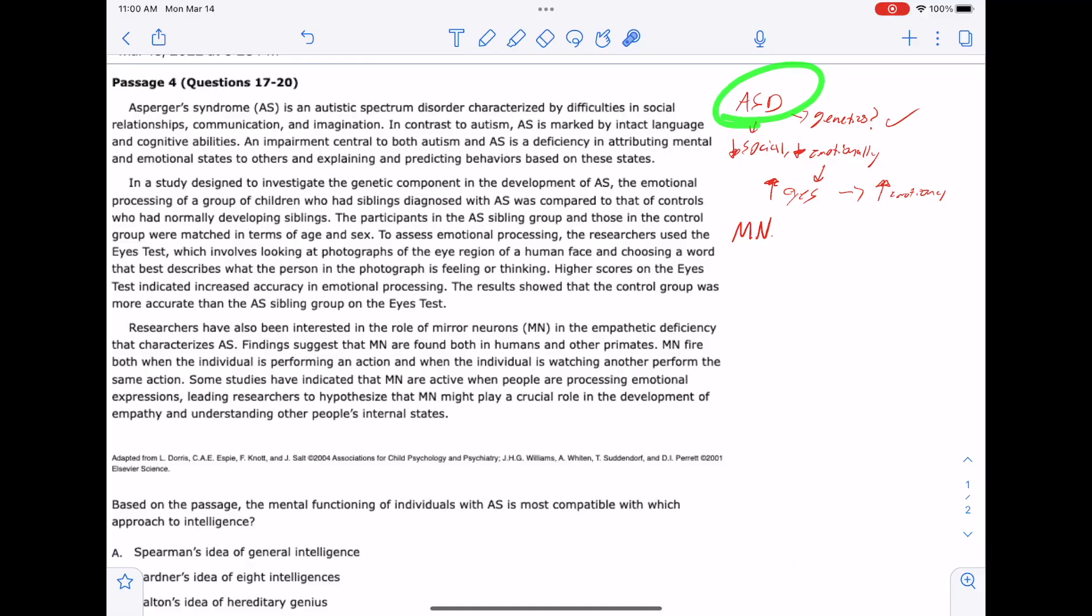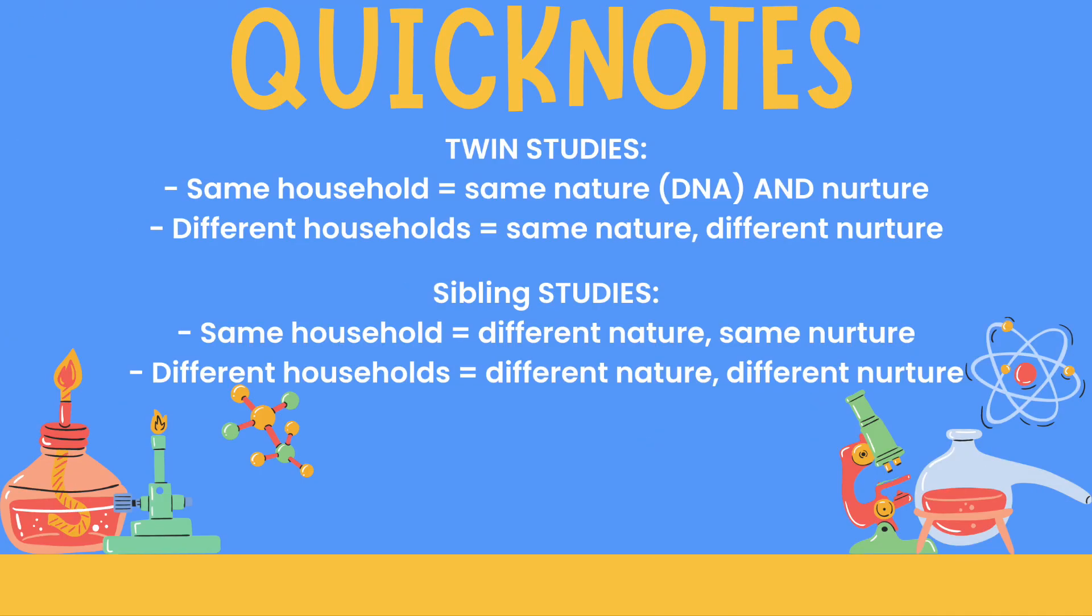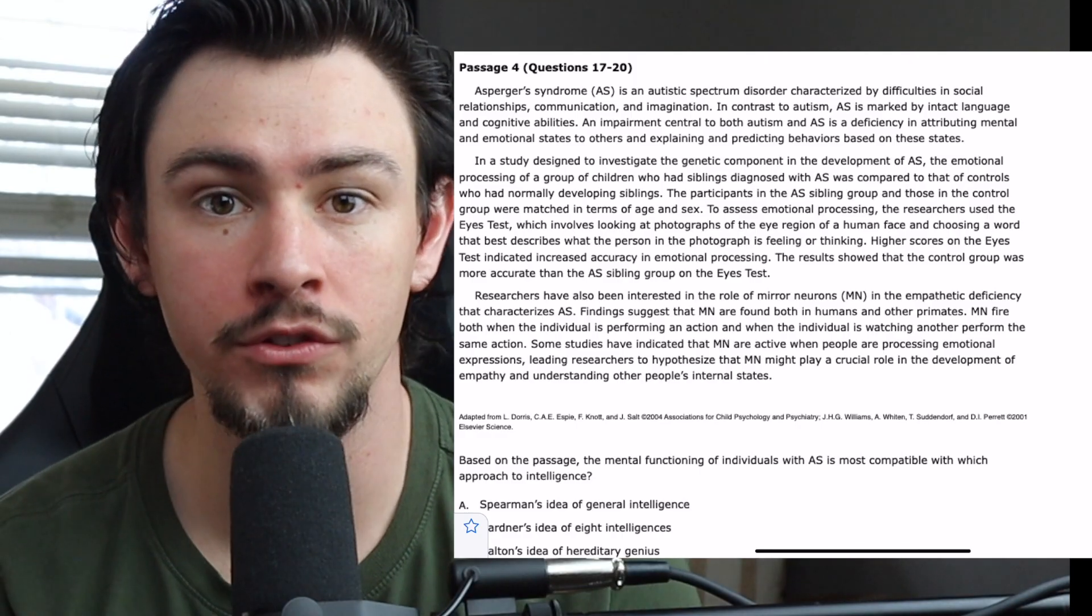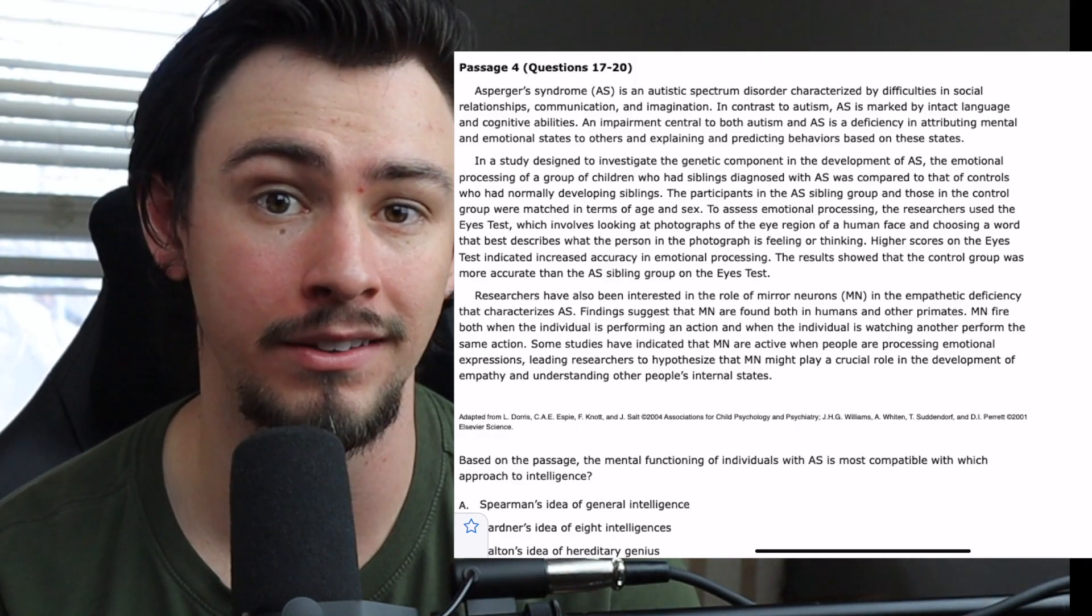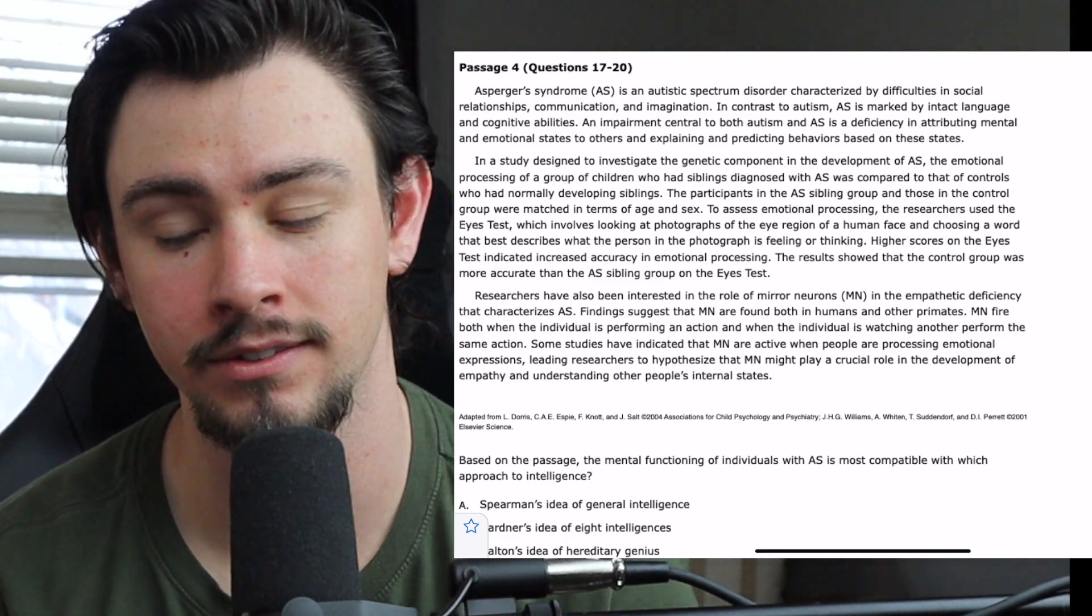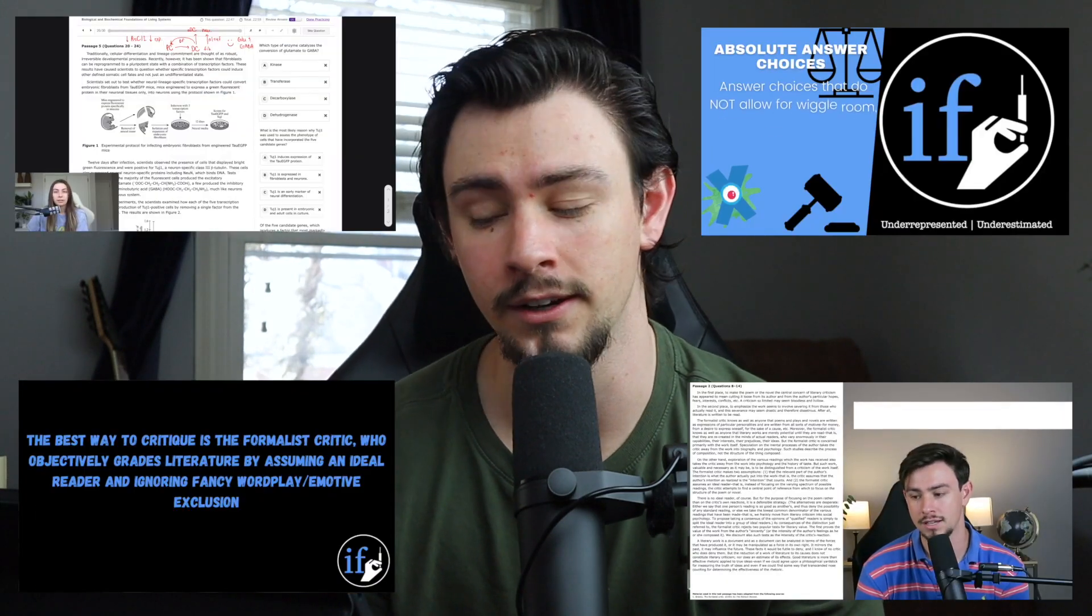Today I'm going to demonstrate proper MCAT strategies to help make the passage and questions a bit easier and teach you some pretty cool sciences along the way. We're going to be using the double AMC sample test, psych-soc, passage number four. As I read through the passage, I'm going to show you my thought process and demonstrate the strategies for you.